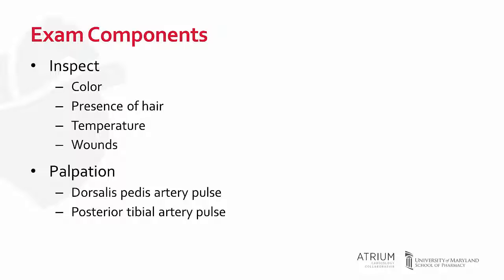Now let's review these elements. It's important that when we are completing this exam, we do this on both the right and left side because we want to look for differences between the two legs. The first thing we want to do is inspect. We want to look for differences in color in the lower extremity and assess for the presence of hair. Is the hairline symmetrical? Do we notice less hair growth on one extremity than the other? If we see that, it is not specific for peripheral arterial disease, but it could be a sign of decreased blood flow in the lower extremity with less hair growth.